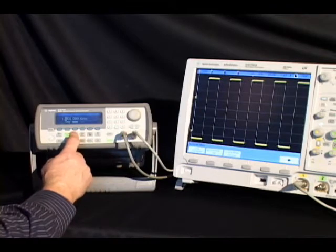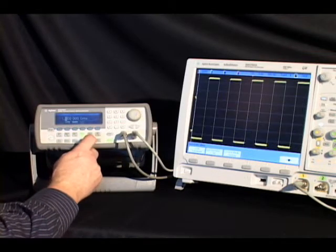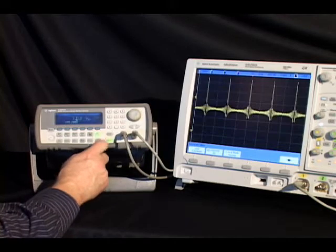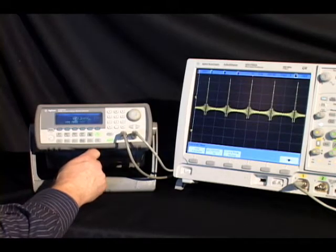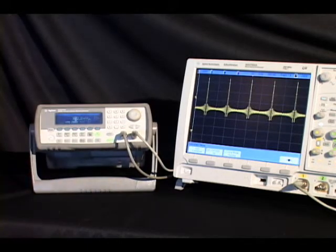The 33220A is armed with a full arsenal of built-in signals, including pulse and arbitrary waveforms, using a 14-bit, 50-megasample per second, 64K point ARB generator.